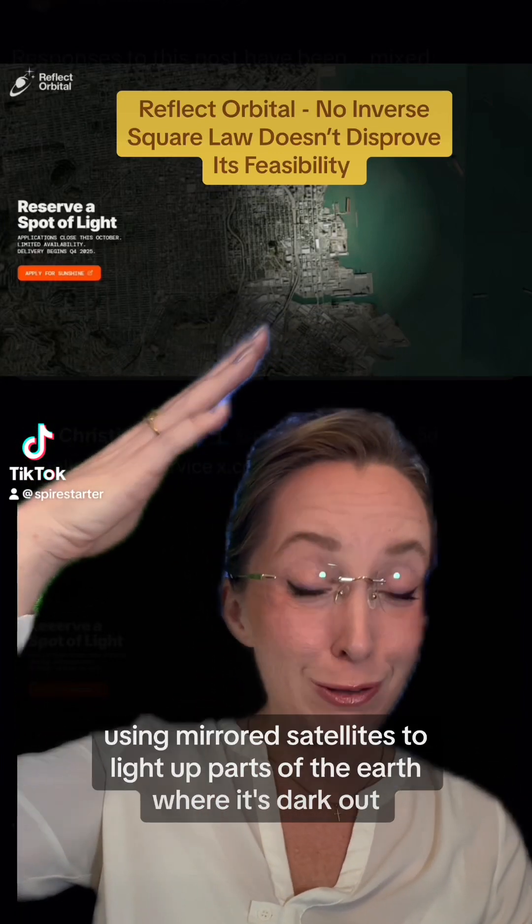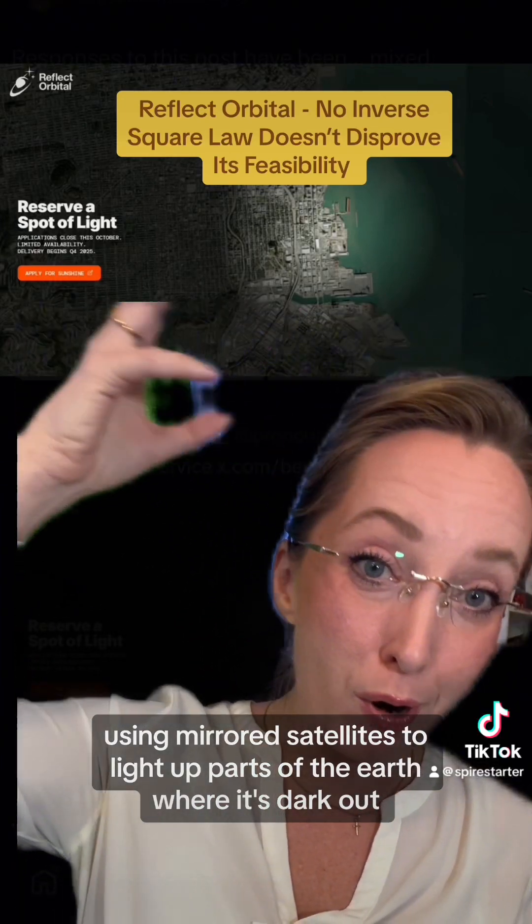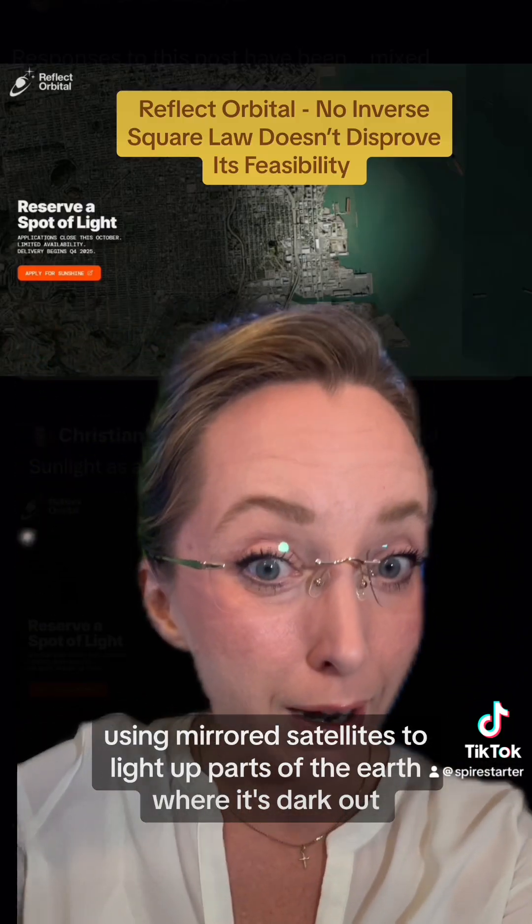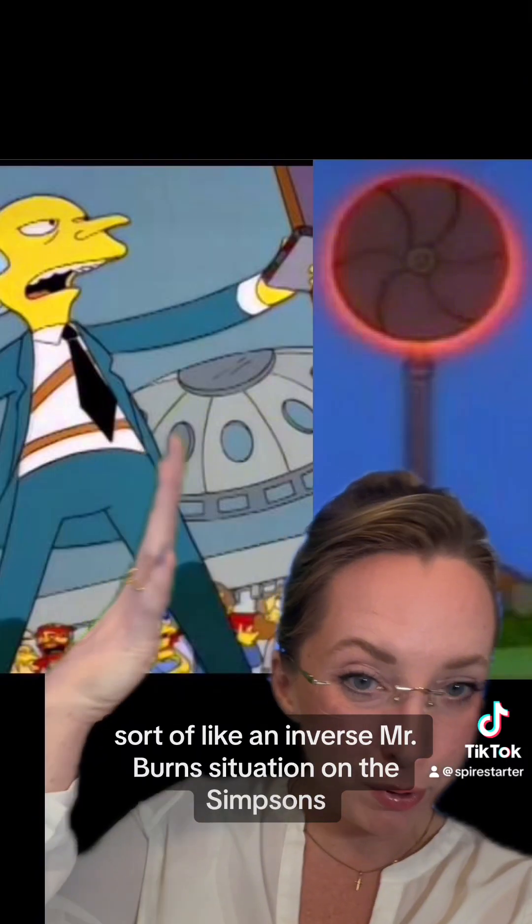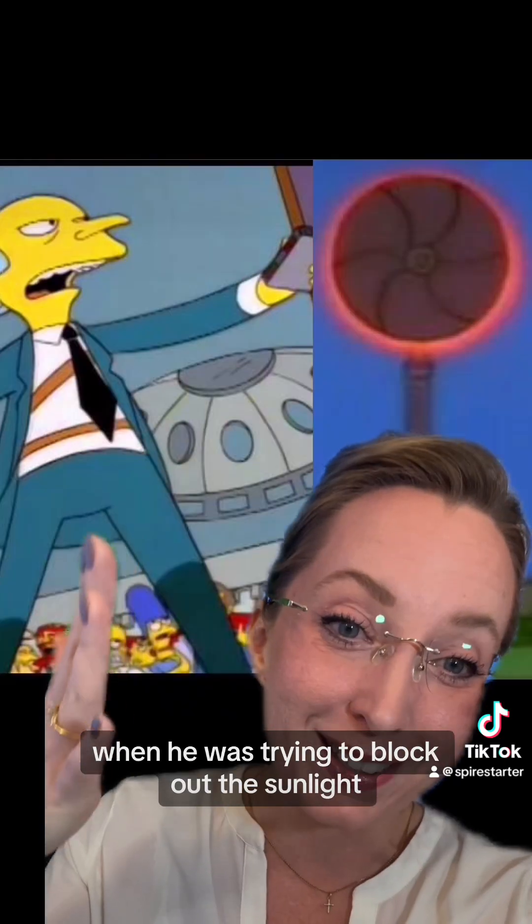There's a startup that's trying to redirect sunlight using mirrored satellites to light up parts of the earth where it's dark out, sort of like an inverse Mr. Burns situation on The Simpsons when he was trying to block out the sunlight.